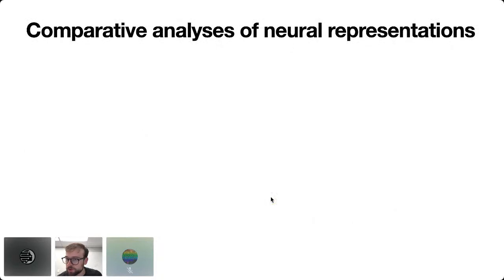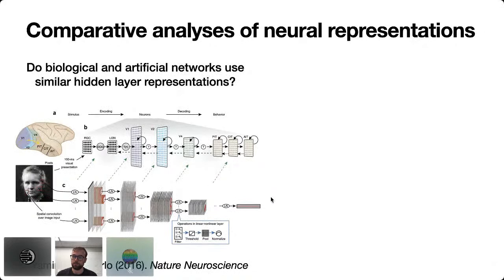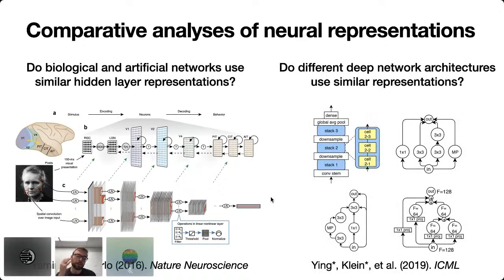The pitch of this talk is that if we want to understand neural computations at an algorithmic level, it might be fruitful to consider similar comparative approaches. This is already an idea with strong precedent in the field — Jim DiCarlo, who you heard from earlier, has been a pioneer in comparing hidden layer representations in deep networks with sensory representations in biological networks.